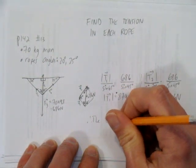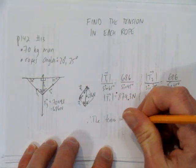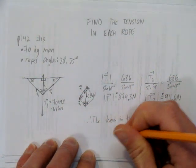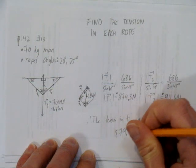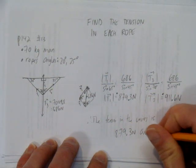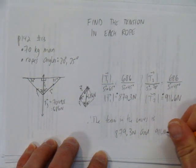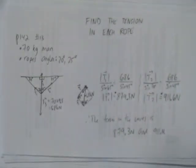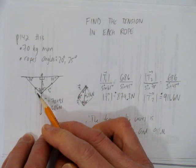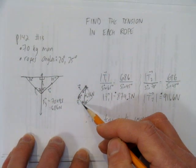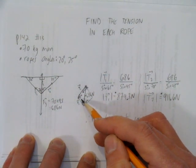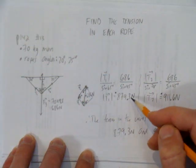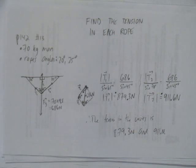Therefore, the tension in the wires is 897.3 Newtons and 911 Newtons. So we've solved for the tension in the wires by setting up our diagram, and then creating a vector diagram, and solving for the angles, and then using this triangle and sine law to solve for the tension in the wires. Thank you very much.